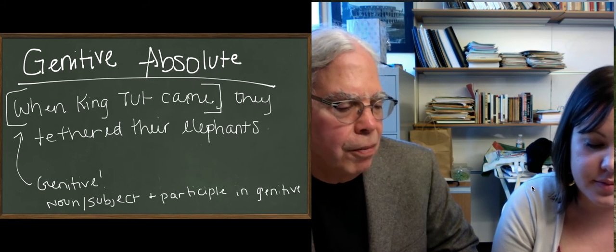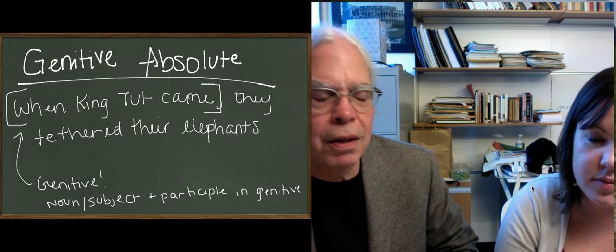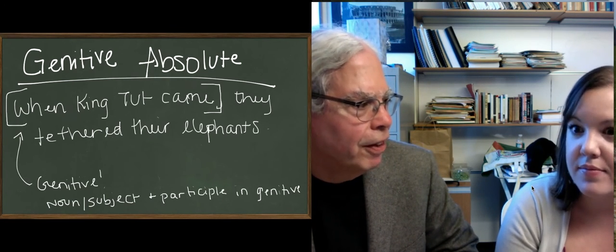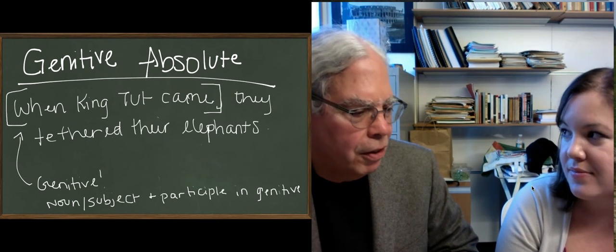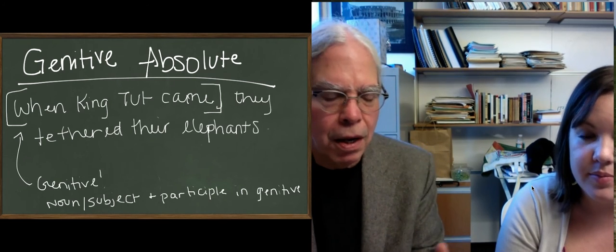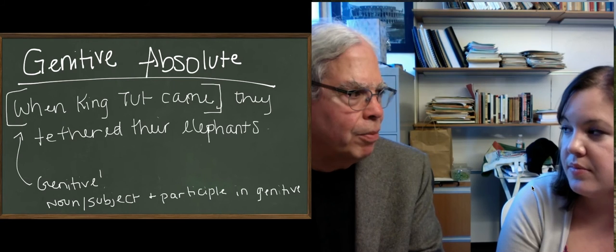What does this mean when you're reading Greek? This is the trickiest part. The little light bulb has to go off in your head. You see a noun in the genitive case, and a participle agreeing with it in the genitive case. There can be other nouns, because that noun can be the subject of a genitive absolute.